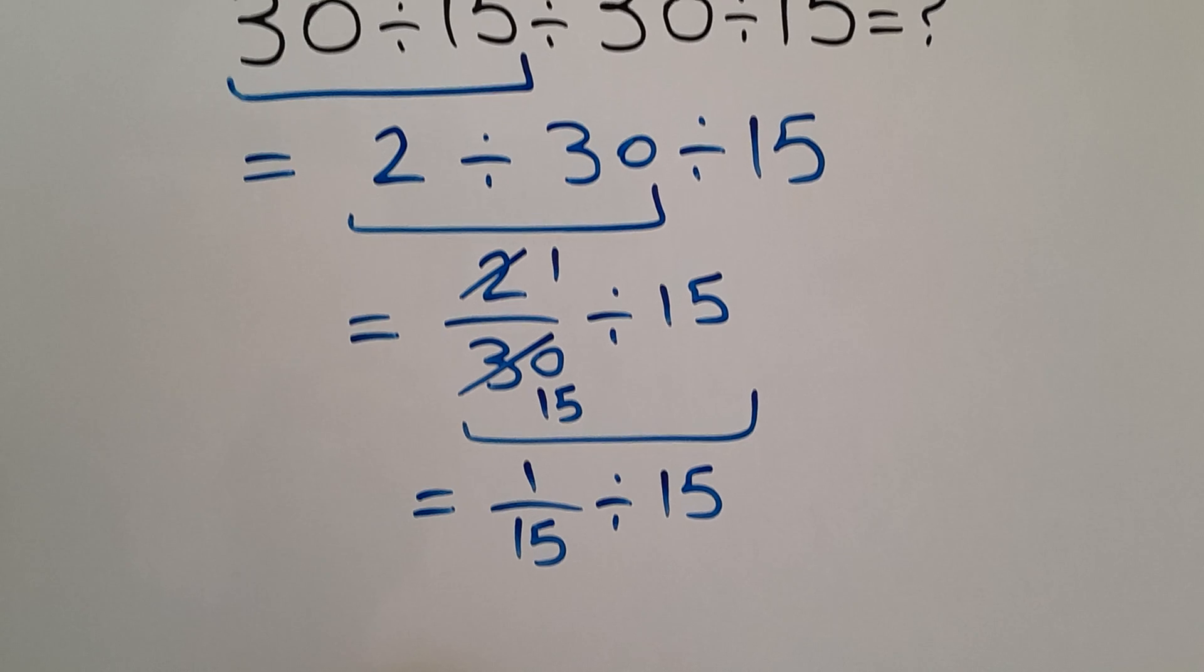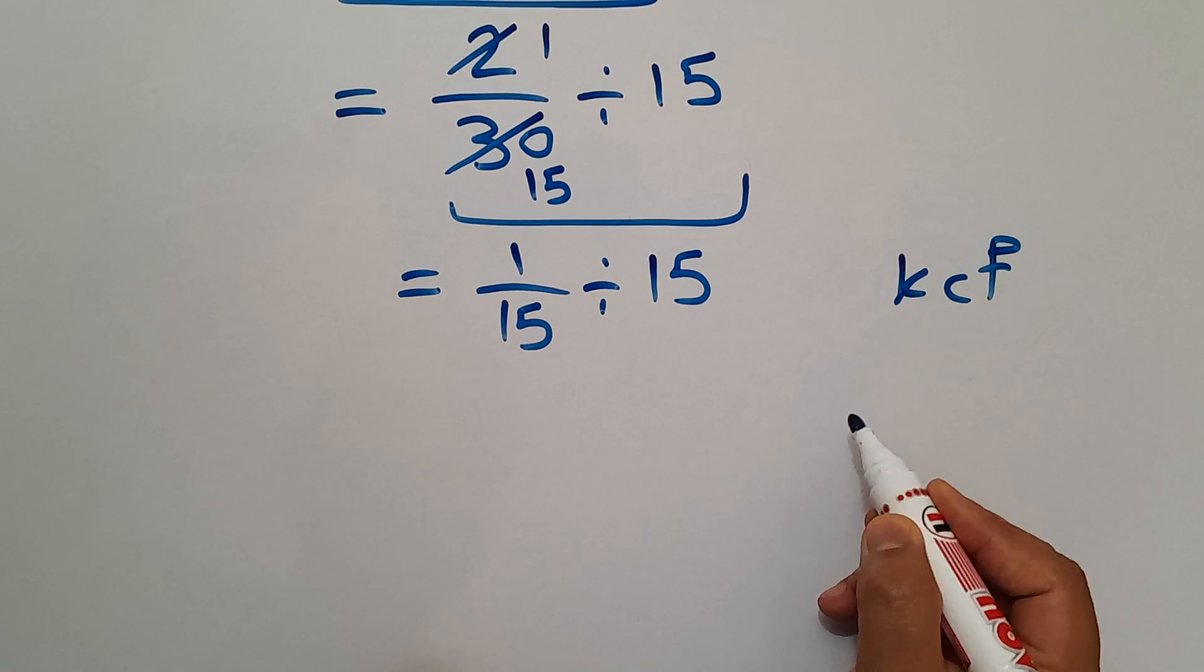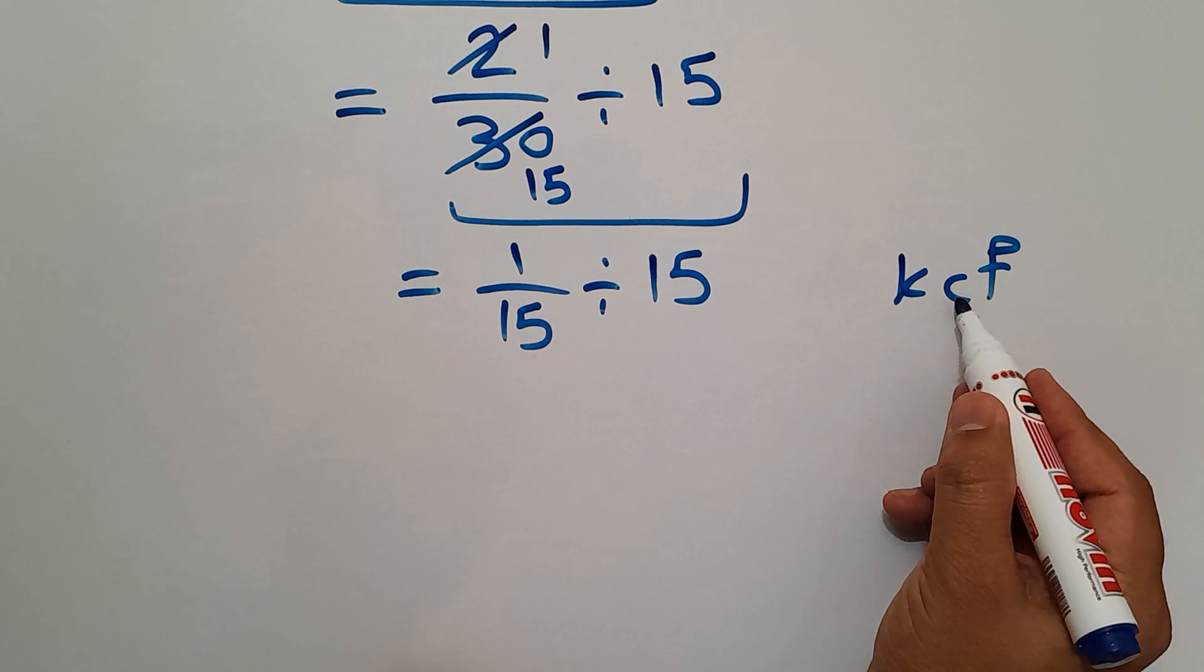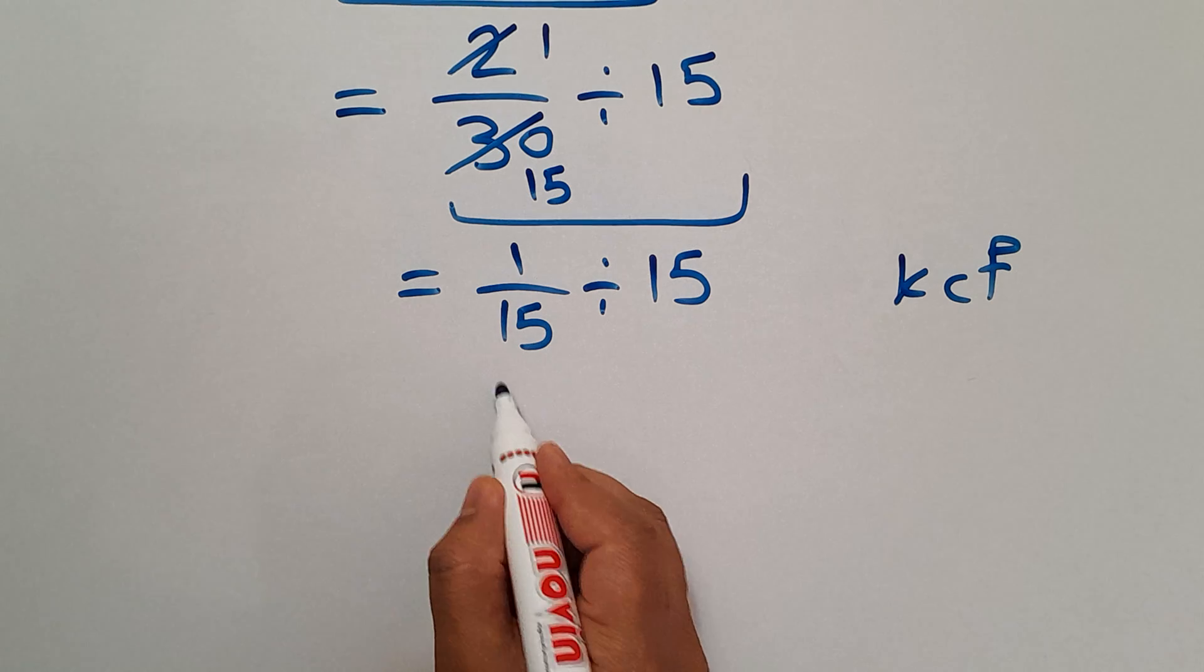Now according to the KCF rule, K stands for keep, C stands for change, and F stands for flip. Keep the first fraction, 1 over 15.